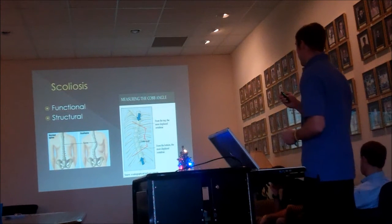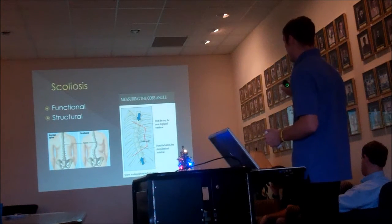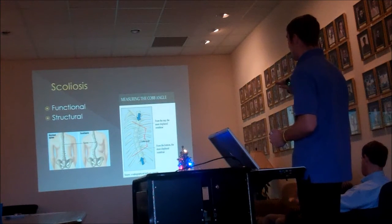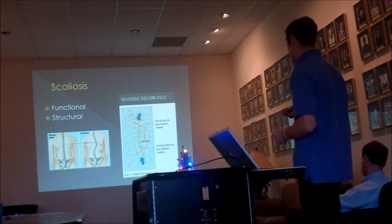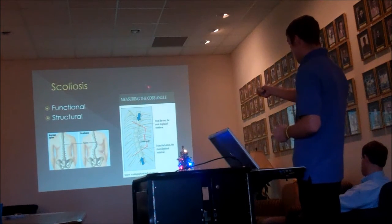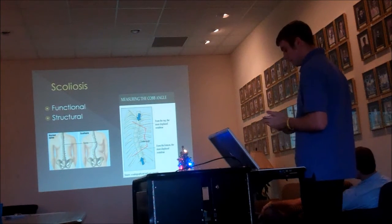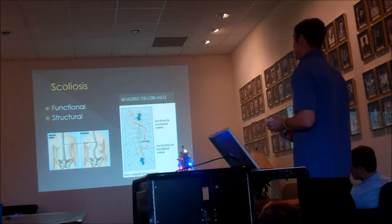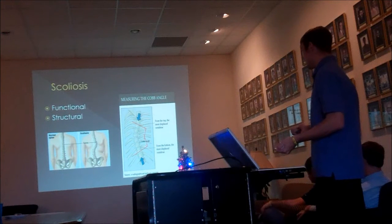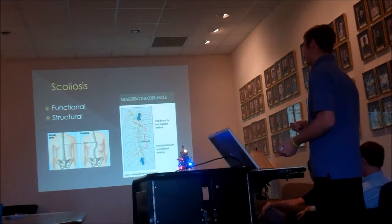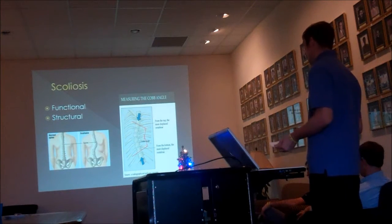On the inferior end, you draw a straight line on the bottom of that vertebra, and on the superior end, you draw a line on top. Then you draw two perpendicular lines coming toward each other and measure the angle they make in the middle. Usually scoliosis is not diagnosed unless the Cobb angle is over 10 degrees, but sometimes with structural scoliosis it can be diagnosed at less than 10 degrees.